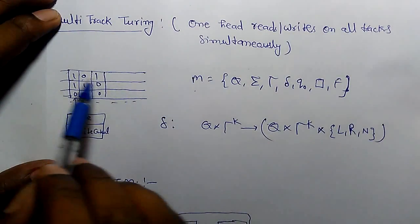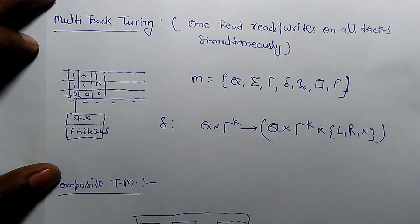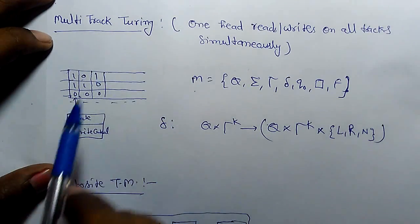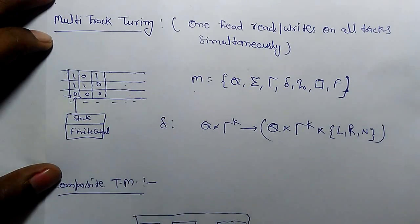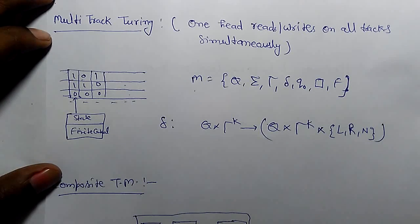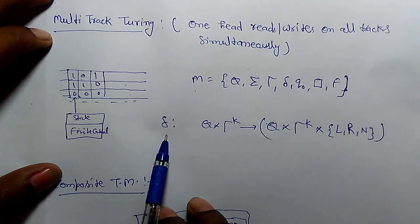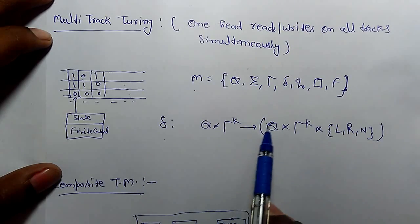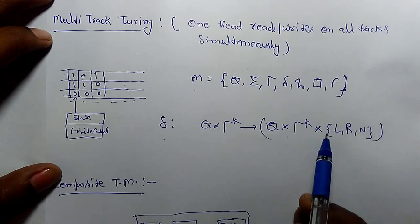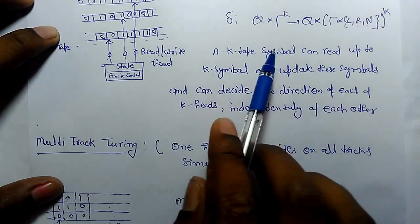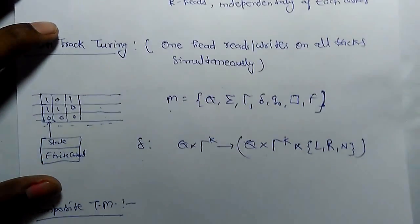In the multi-track Turing machine, the tape has k number of tracks — unlike the single-track, one-dimensional tape Turing machine. There are k number of tracks, making it a k-dimensional Turing machine, but there is only one head that reads and writes on all tracks simultaneously. The transition function of the multi-track Turing machine is Q cross tau^k to Q cross tau^k with moves left, right, and no-move. This highlights the key difference between the multi-tape and multi-track transition functions.